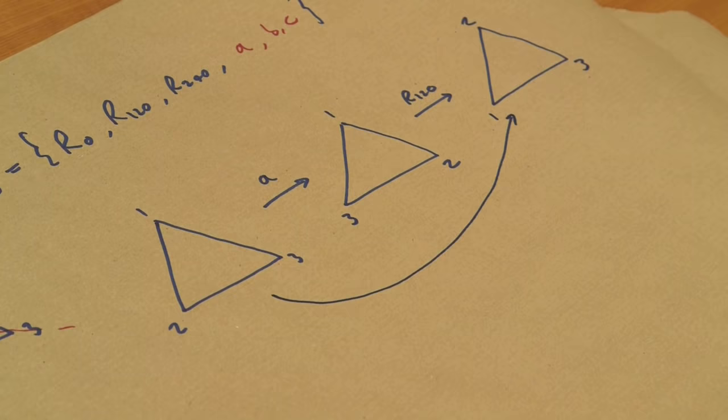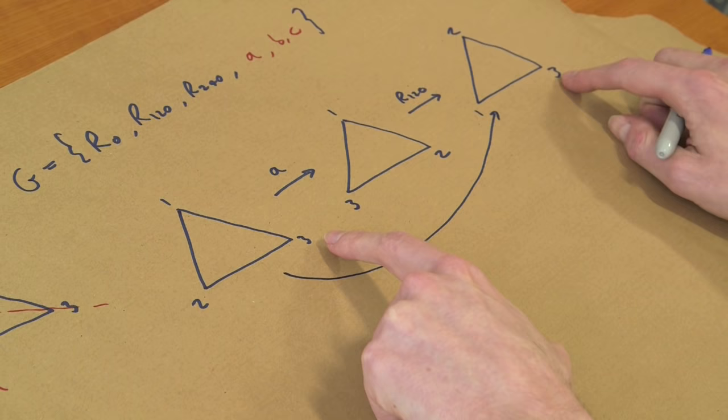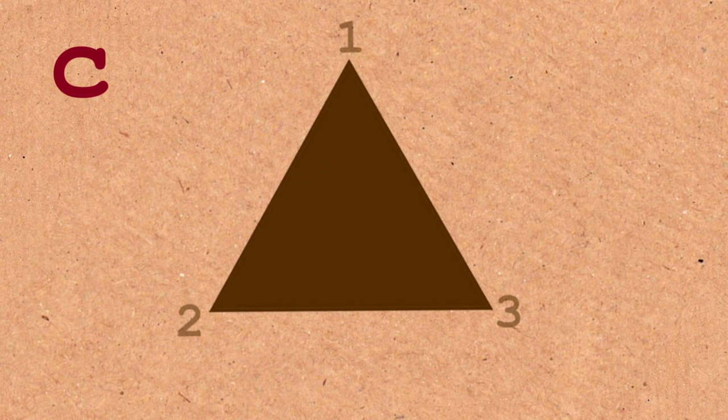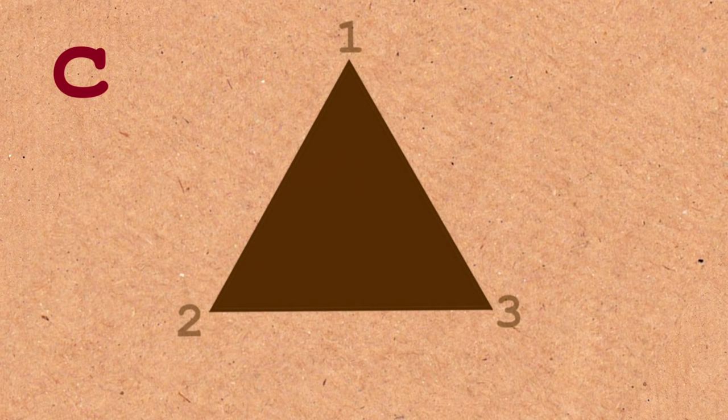Now what does that give us? So this becomes two, this is one, and this is three. Now, we could have gone straight from the initial triangle to this end triangle with just one operation. What would that operation be? Well, what have we done here? We've fixed the bottom right vertex, three, and we've swapped these two. Well, that corresponds to what we call C. That's that reflection, so we've got C.